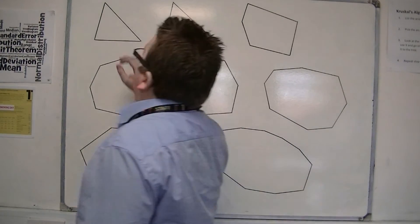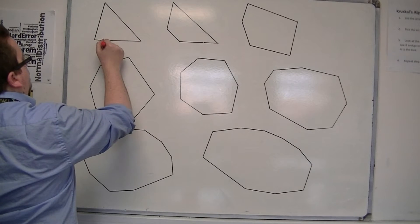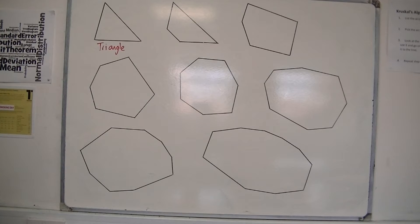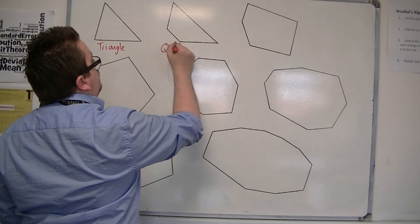So the most obvious one up here is the triangle. This is the three-sided shape. We've already met those. Then we've got the four-sided shapes, known as quadrilaterals.